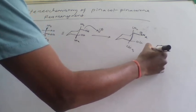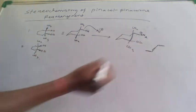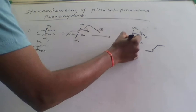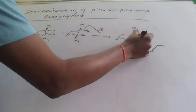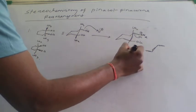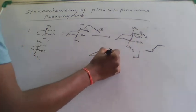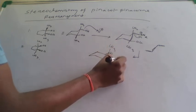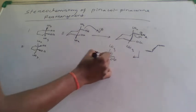This bond is exactly opposite to the leaving group, so this bond migrates and the OH goes like this. The result is your carbocation with CH3 and OH groups rearranged on the carbon framework.